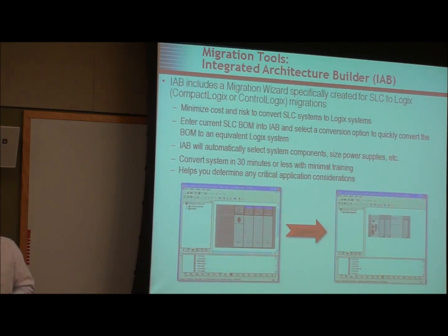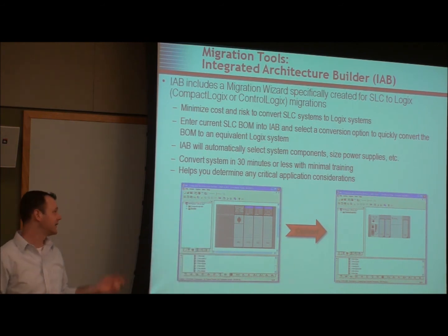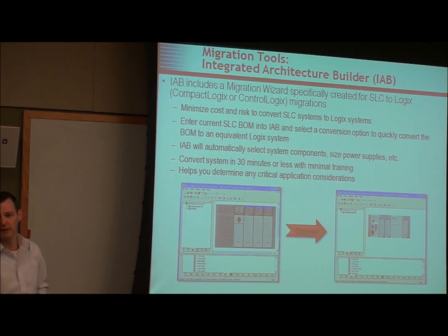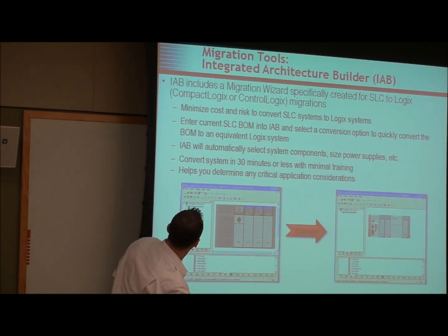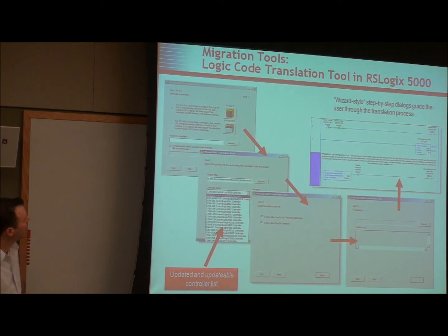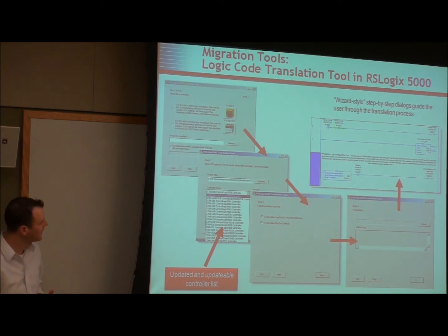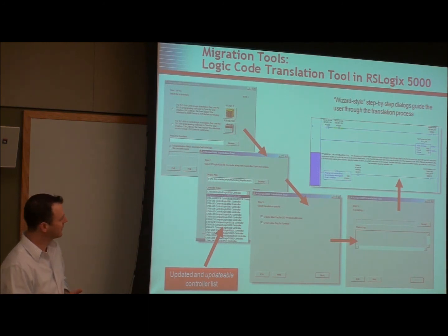In the Integrated Architecture Builder, there's a feature that lets you put in your current SLC system and tell it to convert. It will tell you which CompactLogix is equivalent to your SLC and give you a full bill of materials of everything you need to convert the system. There's also the code translation program that Matt spoke about — you can convert a PLC-5, SLC, or Micro program with it. It brings it into RSLogix 5000 and throws warnings and errors for anything that doesn't convert properly.